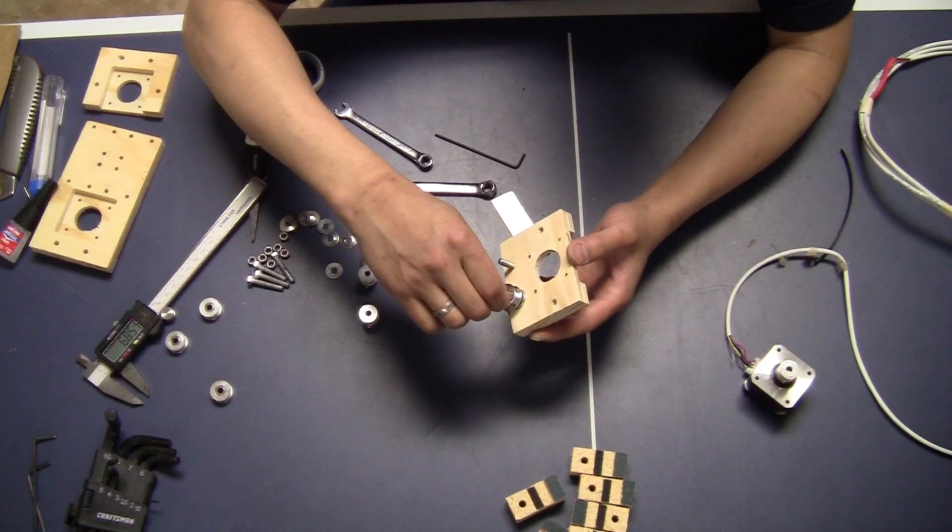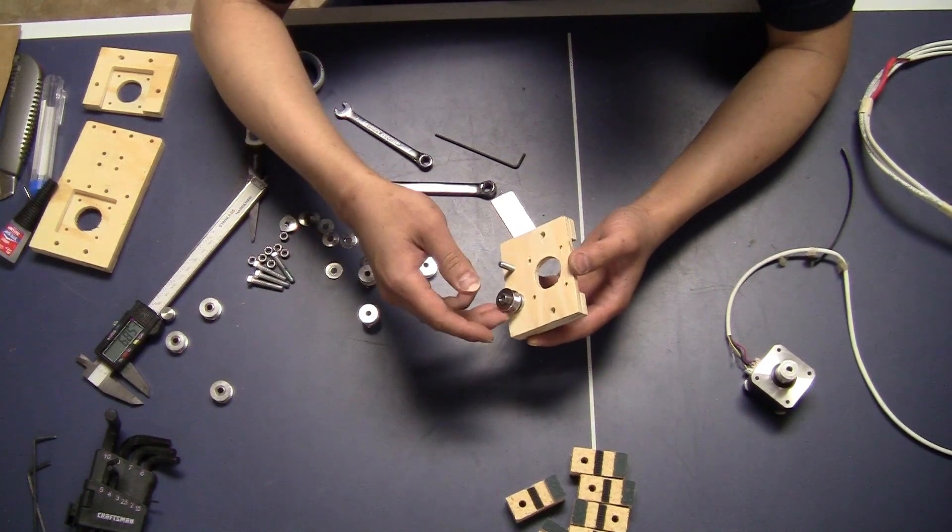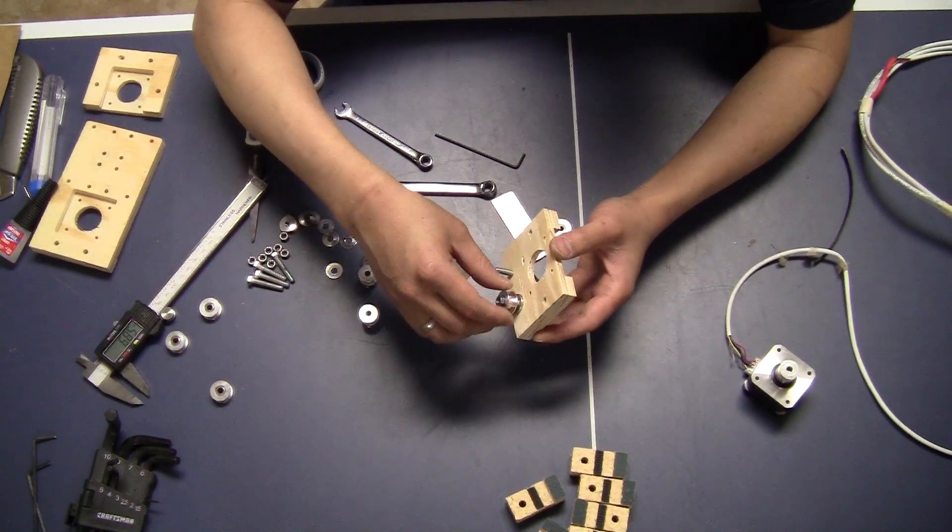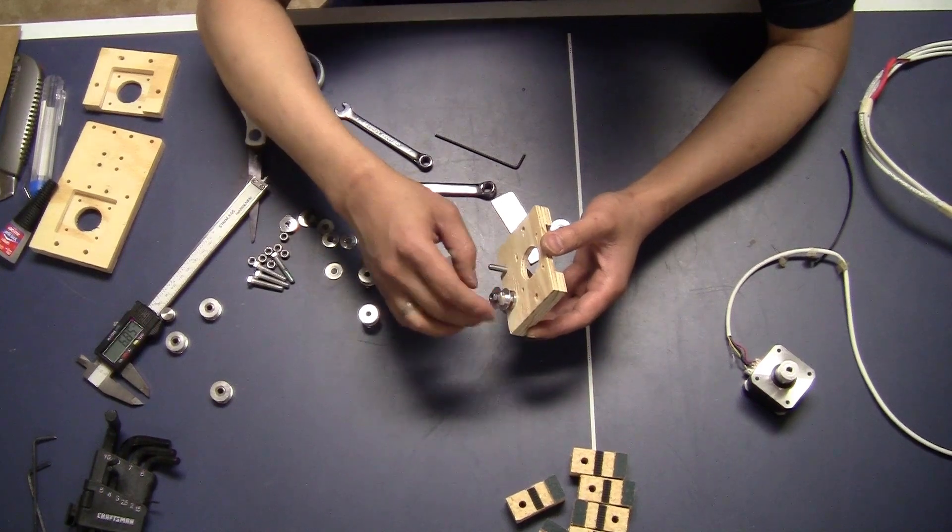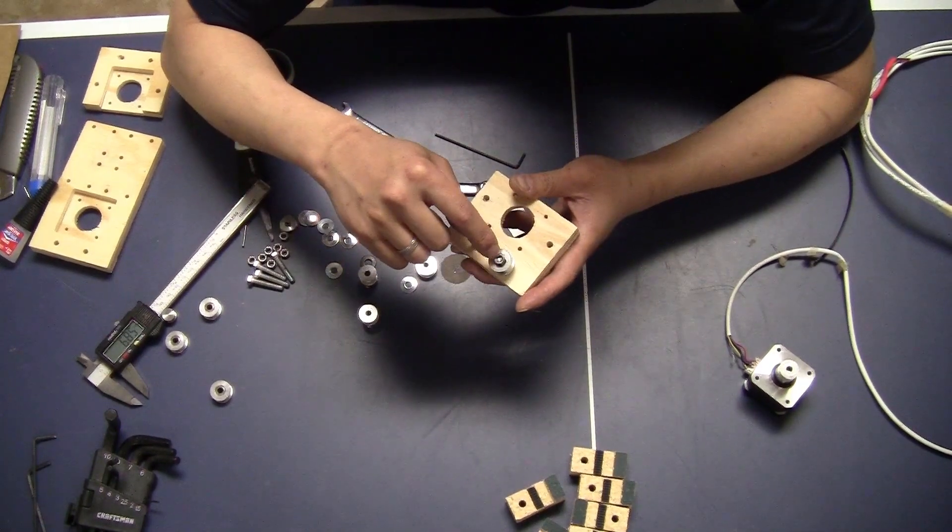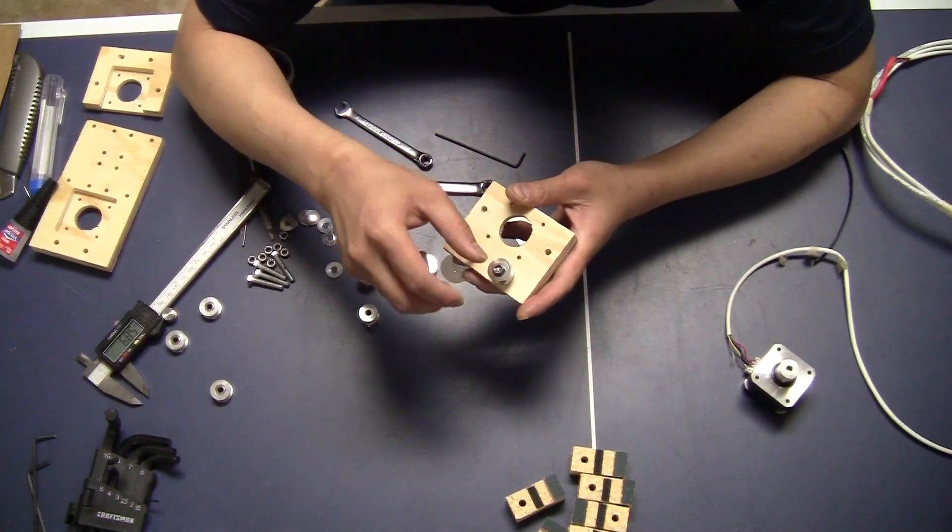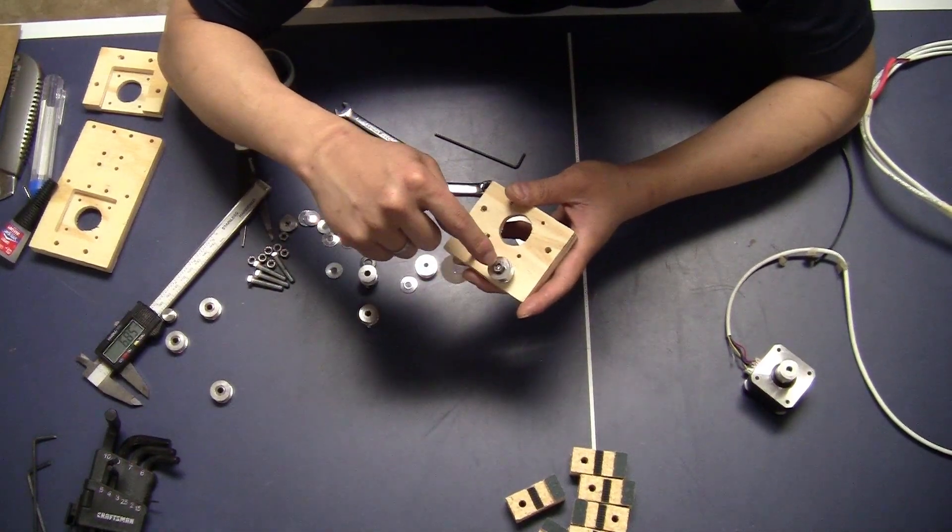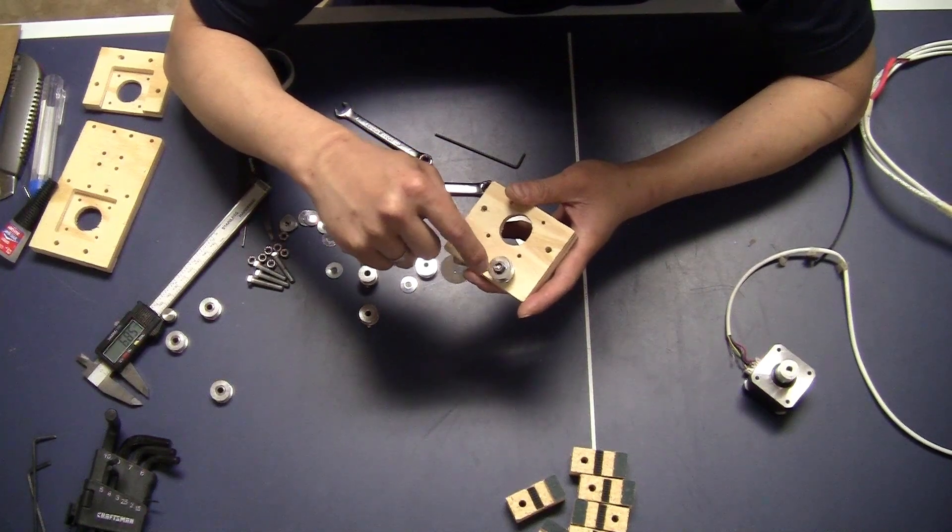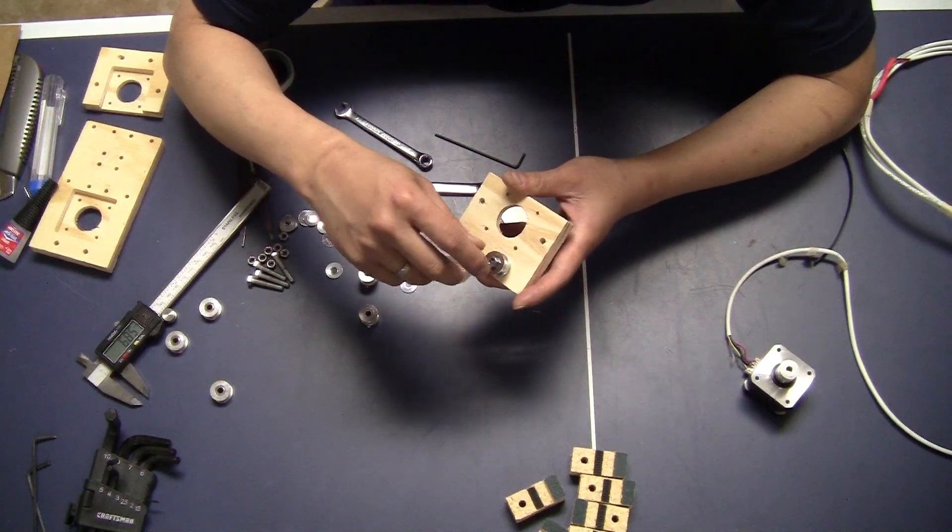And then put another nut on it. So you only need to tighten this lightly and don't press it too hard. Just make sure that the idler is still rotating freely. And then because this nut is not really tightened, to prevent it from rotating and rolling out, you just use some of the hot glue gun and put some glue in here. So the nut won't rotate.